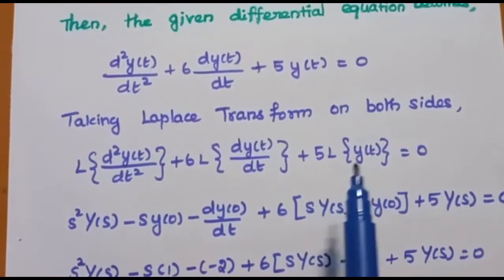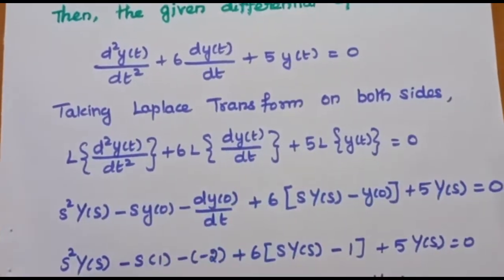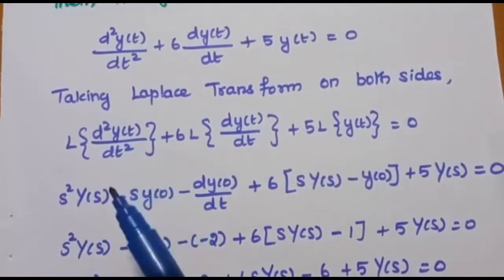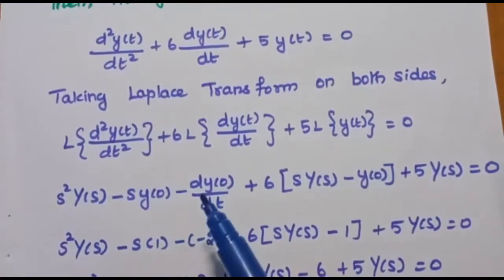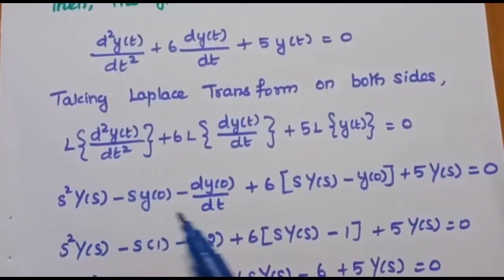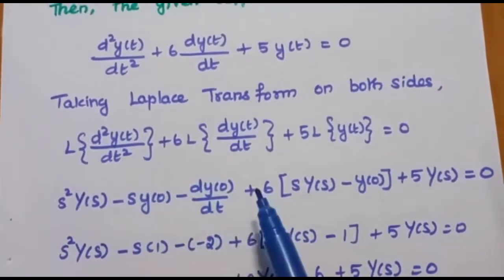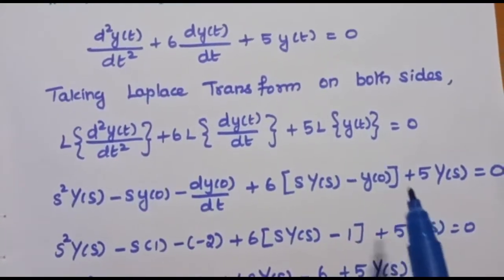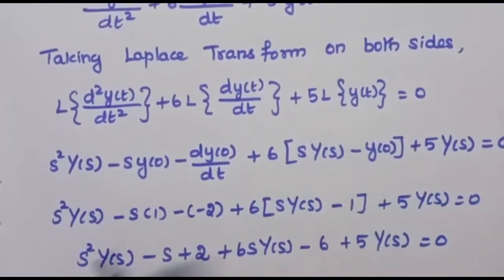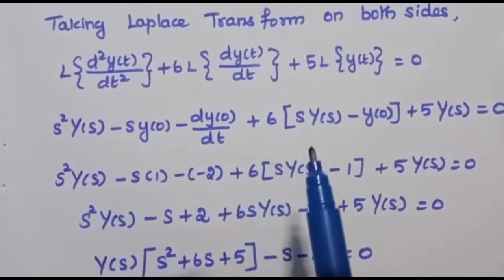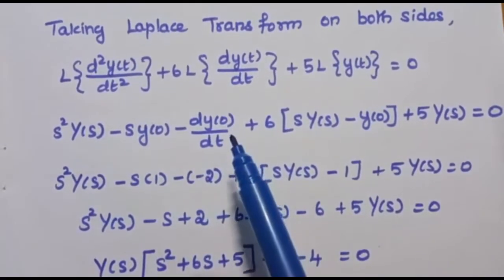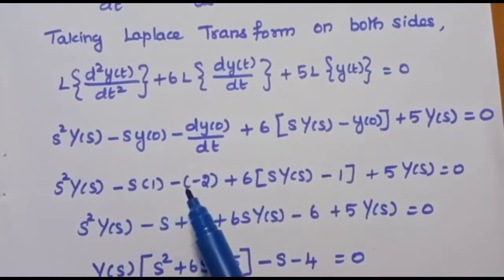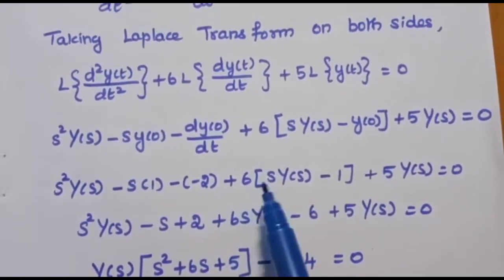After that we have to use the differentiation property of the Laplace transform. The Laplace transform of d squared y of t by dt squared is s squared Y of s minus s y of 0 minus dy of 0 by dt. Then plus 6 into Laplace transform of dy of t by dt, which is s Y of s minus y of 0, plus 5 Y of s is equal to 0. After that we substitute the initial values: y of 0 is 1 and dy of 0 by dt is minus 2. We get s squared Y of s minus s times 1 minus of minus 2, which becomes plus 2, plus 6 into s Y of s.